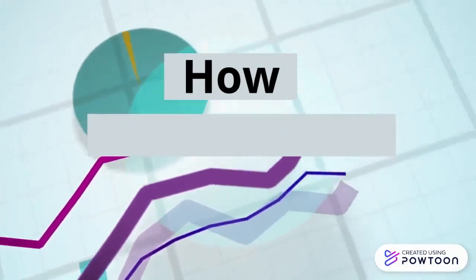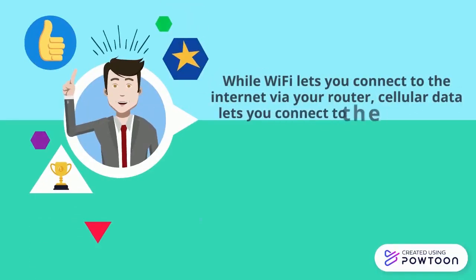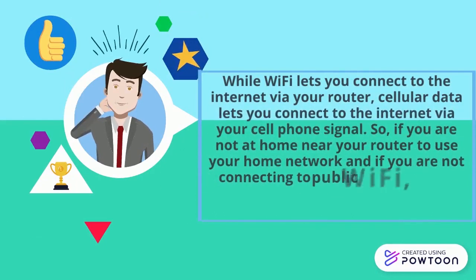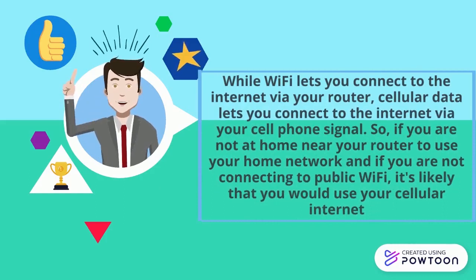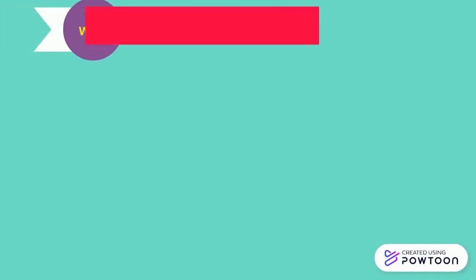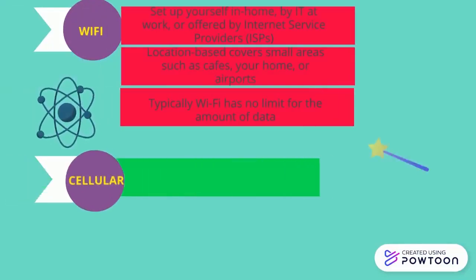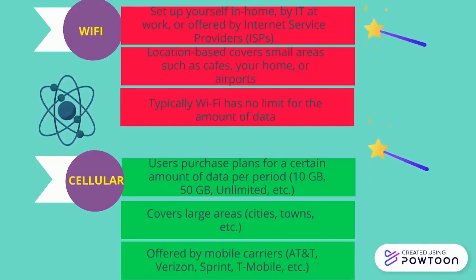Wi-Fi lets you connect to the internet via a router. If you are not at home near your router to use your home network, and if you are not connected to public Wi-Fi, it is likely that you will use your cellular internet. For Wi-Fi: first, you can set it up yourself at home; second, it is location-based and covers small areas; third, typically Wi-Fi has no data limit. For cellular: users purchase plans for a certain amount of data per period, it covers large areas, and is offered by mobile carriers.